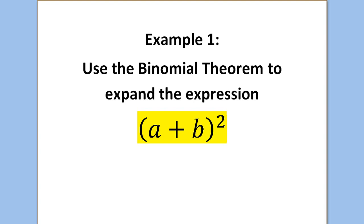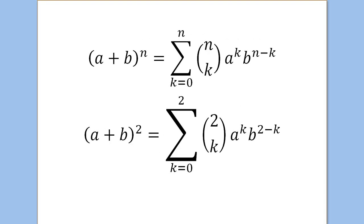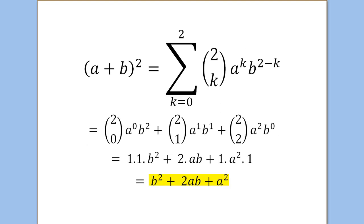We're going to use the binomial theorem to expand the expression (a + b) all squared: a squared plus b squared plus 2ab. But what if you had to expand (a + b) to the 735? Not so easy. That result comes from the binomial theorem. The general formula at the top applies, and for n equal to 2 we get: 2 choose 0 times a to the 0 times b squared, plus 2 choose 1 times a to the 1 times b to the 1, plus 2 choose 2 times a squared times b to the 0.